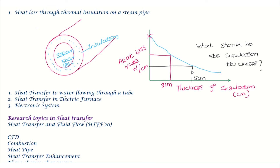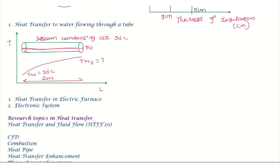Next example: heat transfer to water flowing through a tube, as in a tube-in-tube or shell-and-tube heat exchanger. This is applied in the Rankine cycle — for example, using low-pressure steam to heat water. If there is cooling water at 30 degrees Celsius entering and the outlet temperature needs to be 35 degrees Celsius, heat transfer knowledge is used to determine the required tube length.